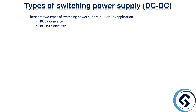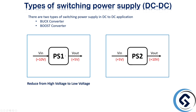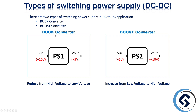Typically, there are two types of Switching Power Supply in DC to DC application. The first one is Buck Converter and the second one is Boost Converter. Let's assume there are two power supplies, PS1 and PS2, and each power supply has an input voltage V-In and output voltage V-Out. If we apply +10V as the V-In to PS1, we will receive +5V as the V-Out. If we apply +5V as the V-In to PS2, we will receive +10V as the V-Out. So PS1 reduces the voltage from high to low — that's the Buck Converter — and PS2 increases the voltage from low to high — that's the Boost Converter.